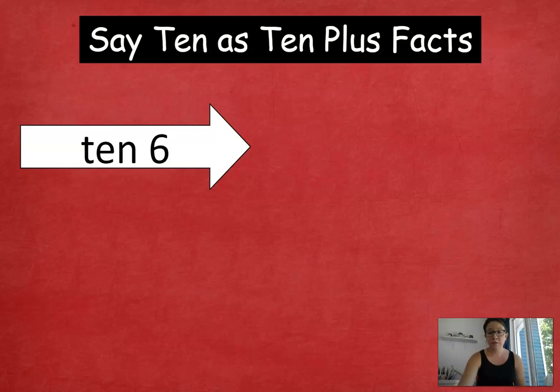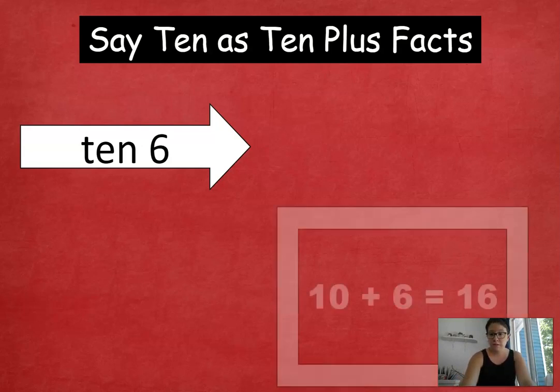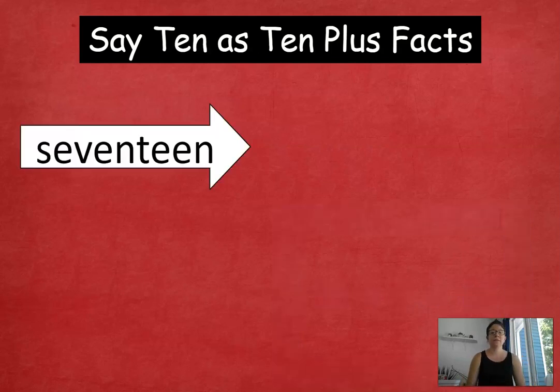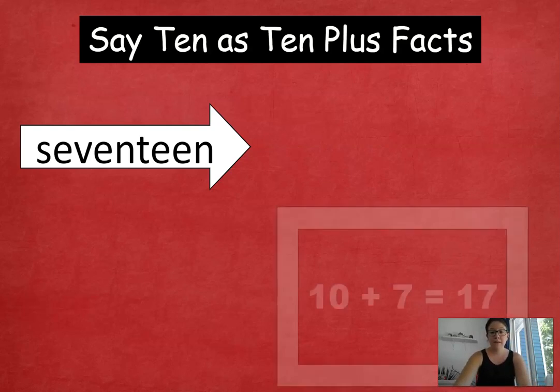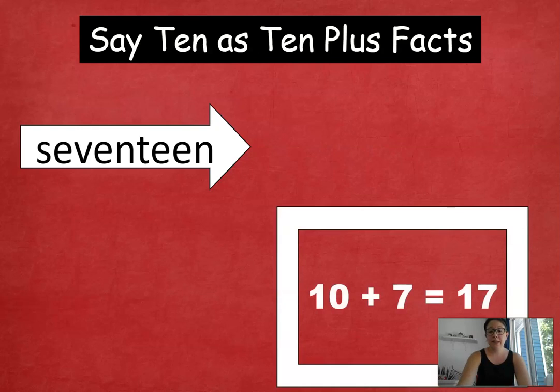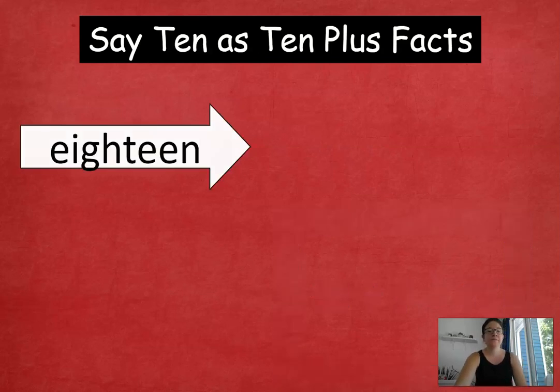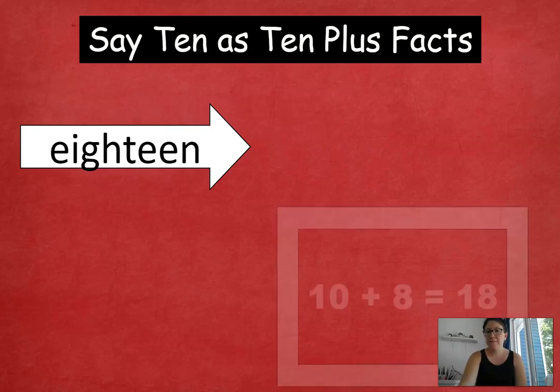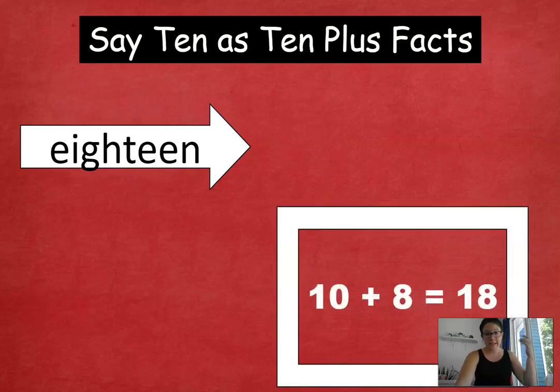10, 6. So, start with 10. 10 plus 6 equals 16. Very good. 17. I'll read that for you. Start with 10. 10 plus 7 equals 17. Excellent. 18. 10 plus 8 equals 18. Very, very good. We're always adding from the 10 when we're doing these.